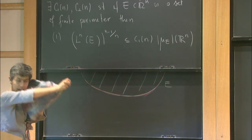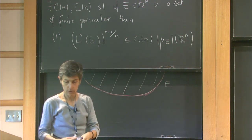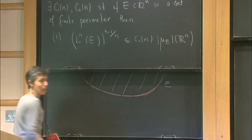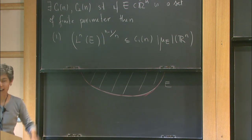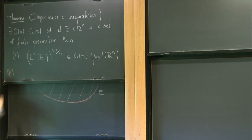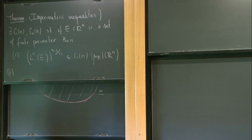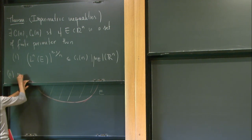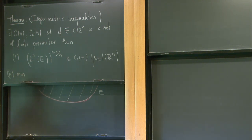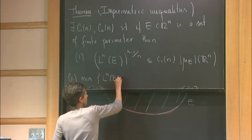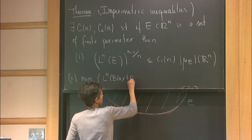We also have the relative isoperimetric inequality. This is the version of these inequalities in a ball. It tells you that the minimum of the Lebesgue measure of the two pieces — the ball minus E and the ball intersected with E — is bounded by a constant times the perimeter measure restricted to the ball.